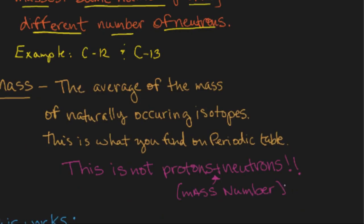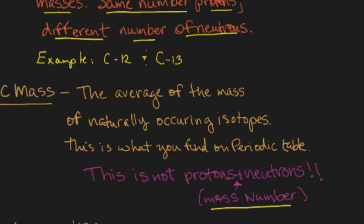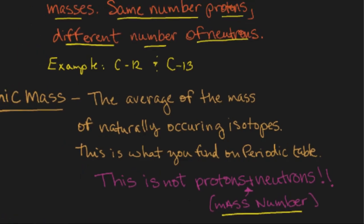Once we discuss the concept of moles, we'll go over the concept of molar mass as well. Now, don't confuse atomic mass with protons plus neutrons. That's the mass number. Here, we're talking about the average of the atomic masses of all the naturally occurring isotopes.